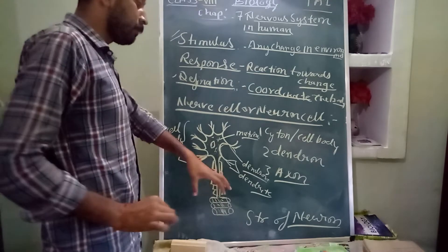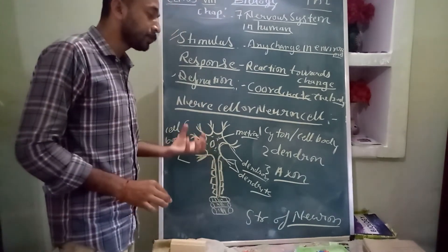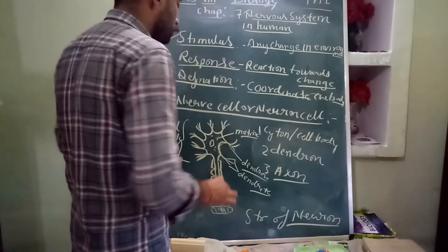So the main function of dendrites is to receive the response from another neurons or nerve cells.